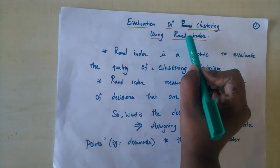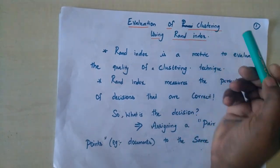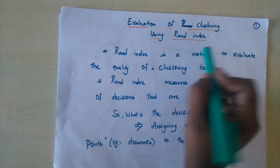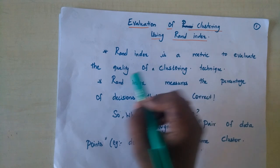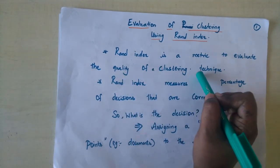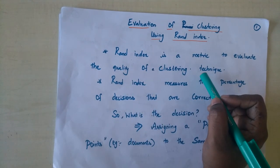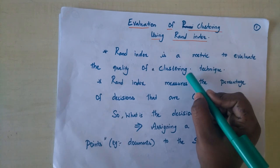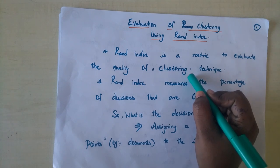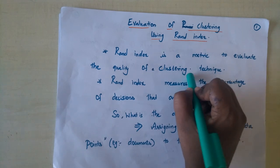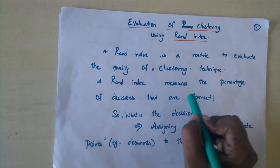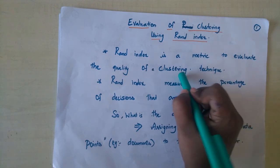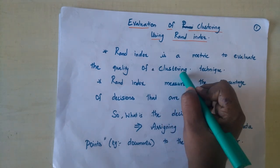Hello all. Today we are going to see about RAND index, which is used for evaluating clustering techniques. It is a metric used to evaluate the quality of a clustering technique. We have seen many clustering algorithms earlier. Clustering is an unsupervised machine learning technique used to group similar types of data in a single cluster. RAND index is a metric which tells us how well a cluster is built.